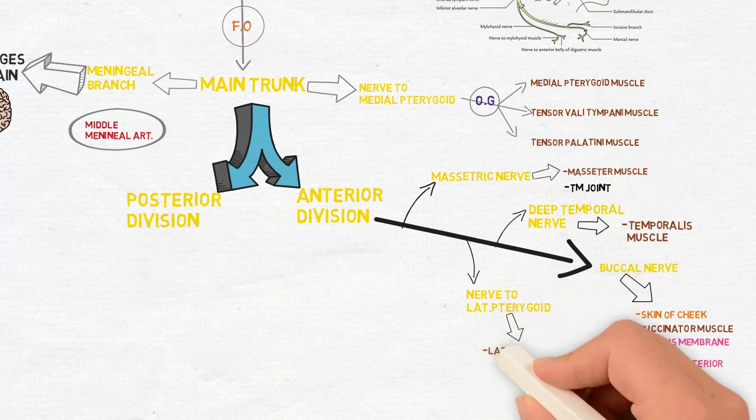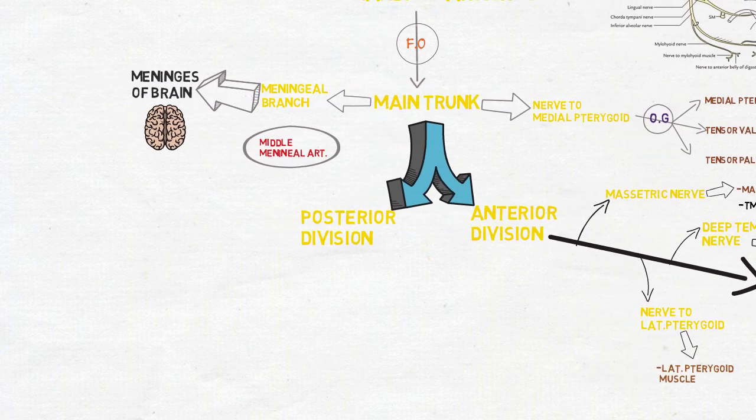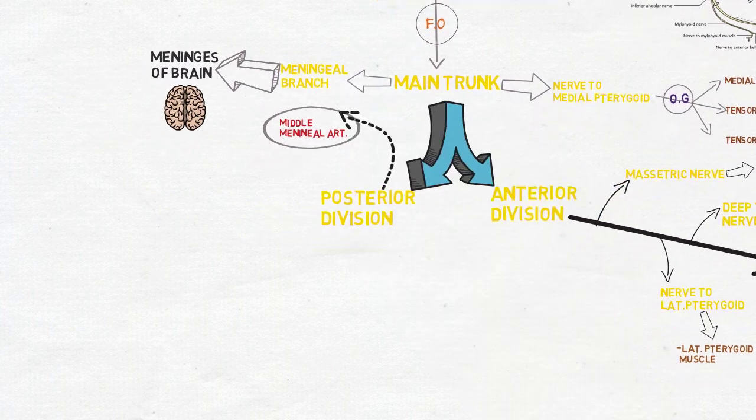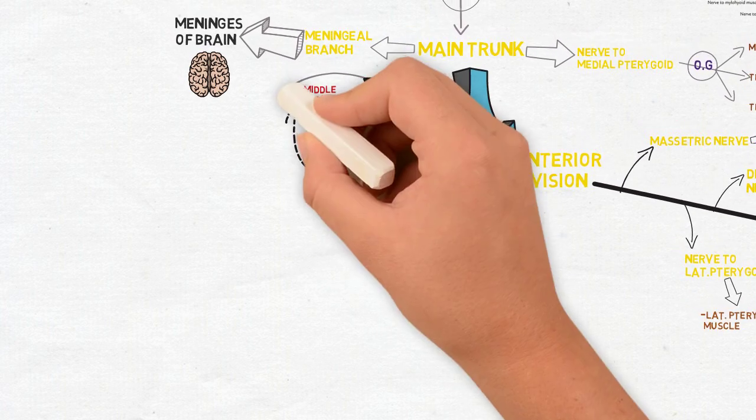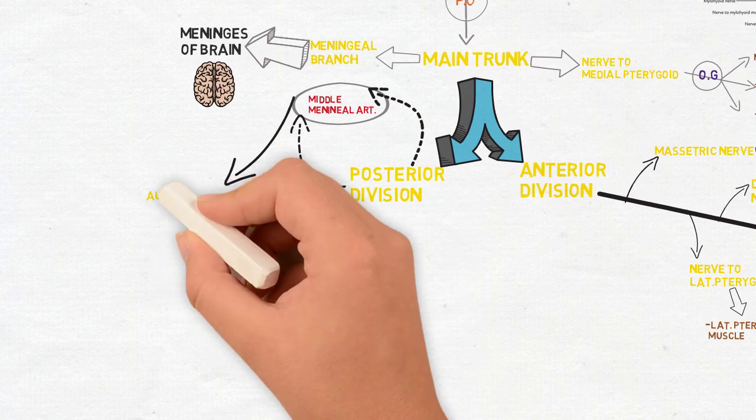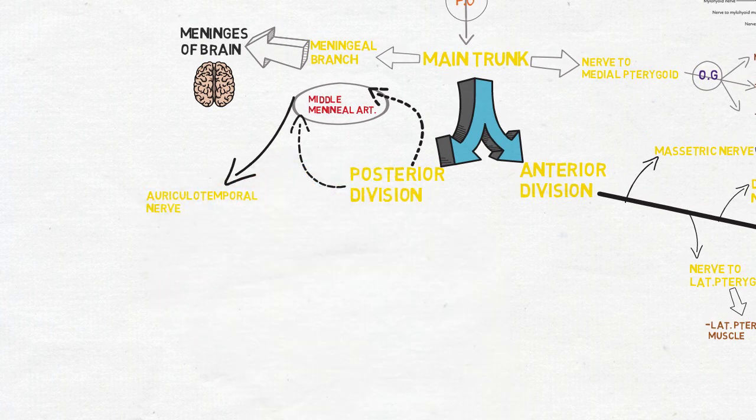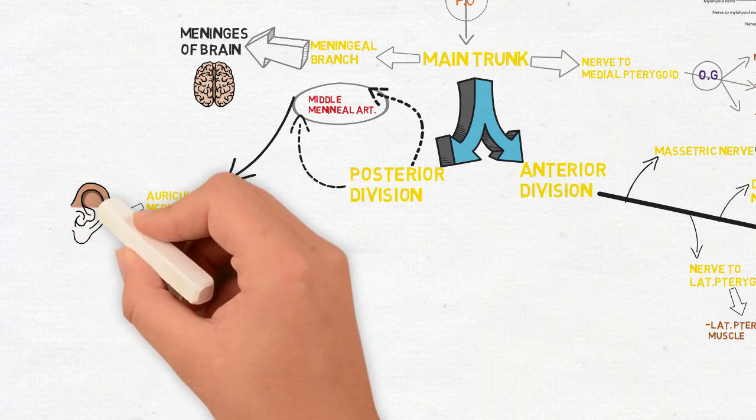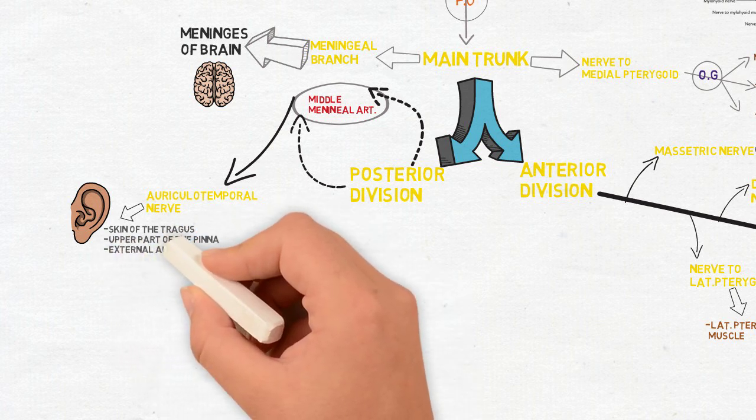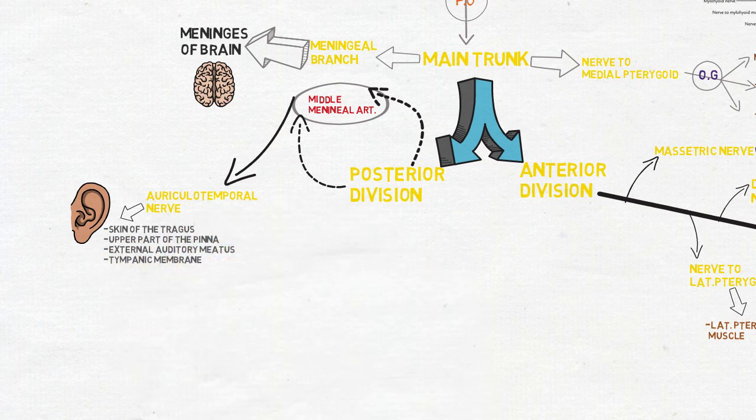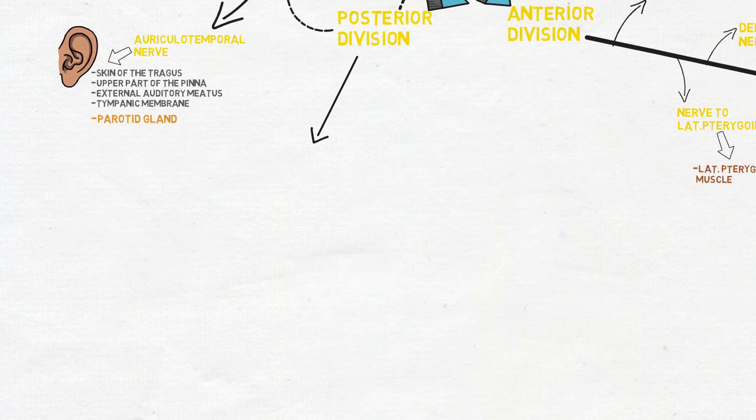This is all about the anterior division. Now coming to the posterior division, the first branch of posterior division is the auriculotemporal nerve which has two heads and these heads encircle the middle meningeal artery and join together to form a single nerve. Now this nerve supplies the skin of tragus, upper part of pinna, external auditory meatus and the tympanic membrane which are related to the auricular region, and also one gland that is the parotid gland.